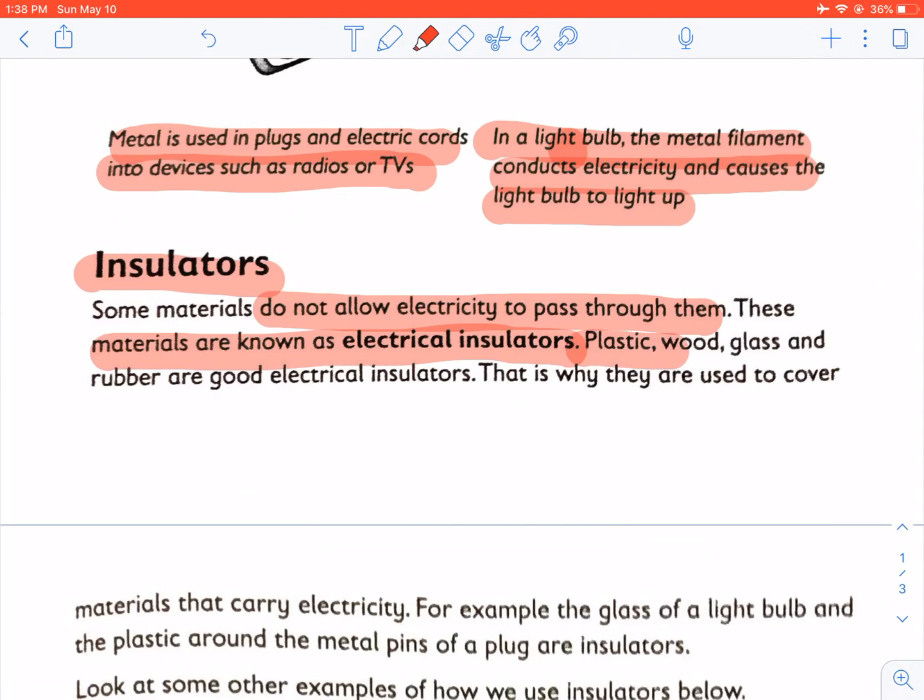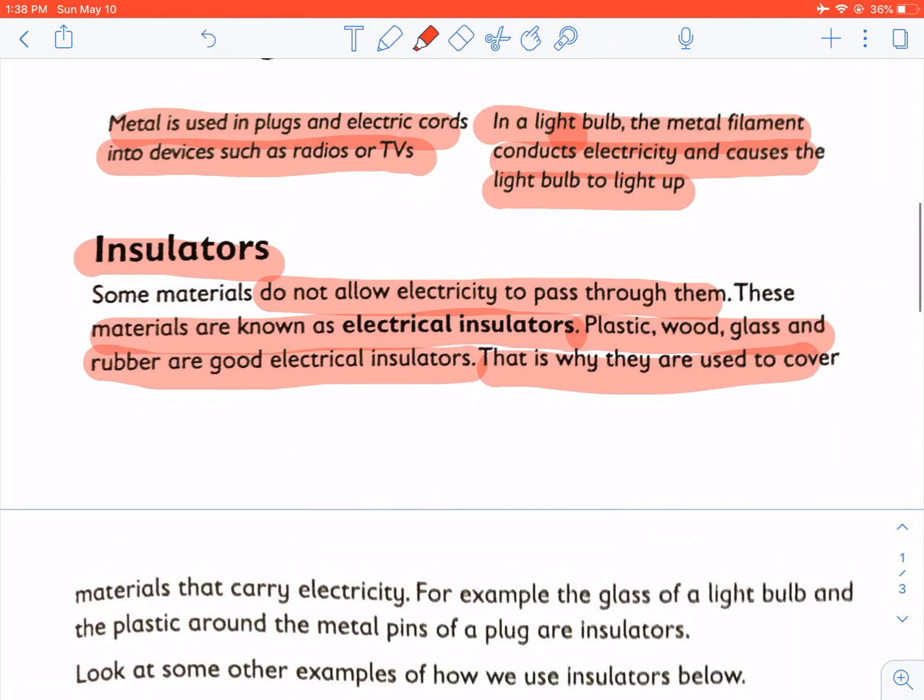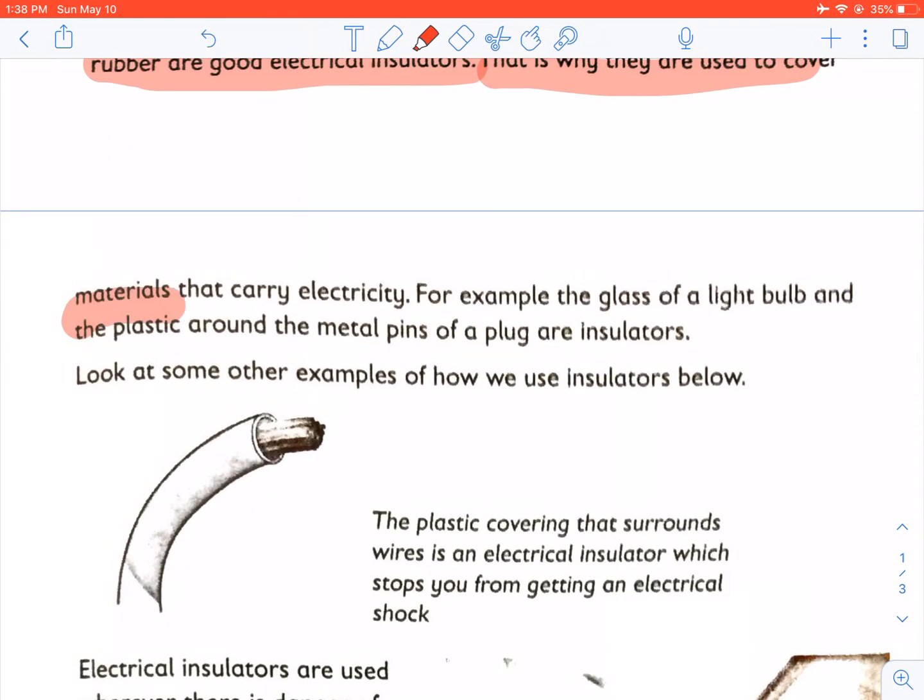Plastic, wood, glass and rubber are good electrical insulators. That is why they are used to cover materials that carry electricity. For example, the glass of a light bulb and the plastic around the metal pins of a plug are insulators.